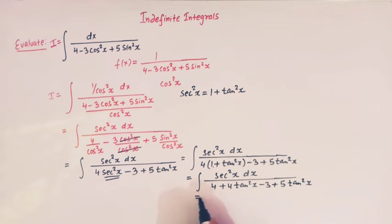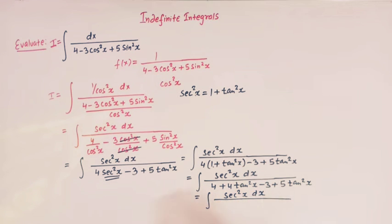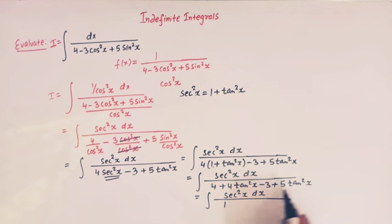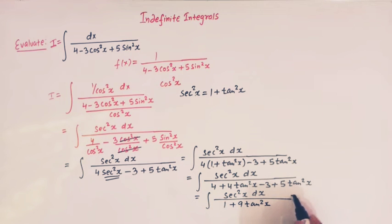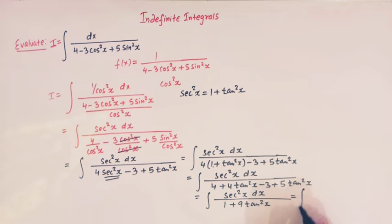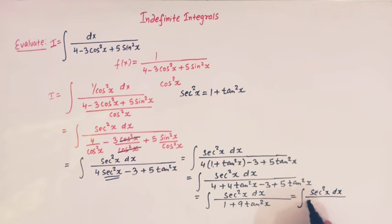We can further simplify the denominator: 4 minus 3 equals 1, and 4 plus 5 equals 9, giving us 1 plus 9 tan squared x. Taking 9 common from the denominator, the integral becomes (1/9) times sec squared x dx over (1/9 plus tan squared x).